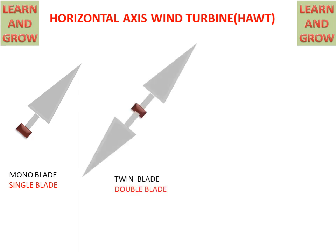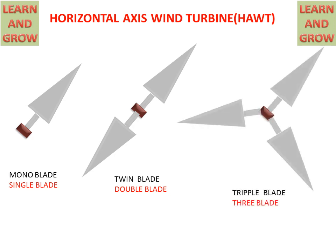Today we will discuss horizontal axis wind turbines, also called HAWT. HAWT has three basic types of blades: first is mono blade or single blade with counterweight, second is twin blade or double blade, and third is triple blade or three blade.